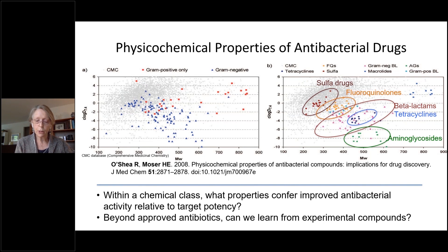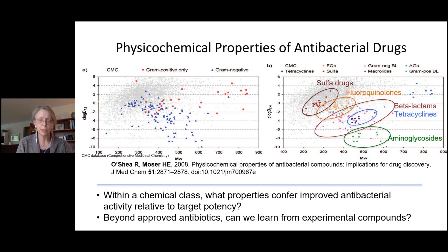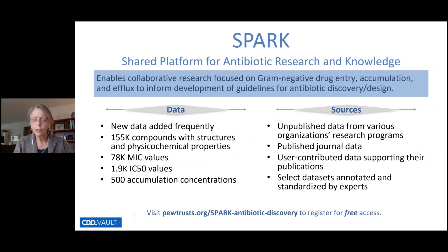All the compounds on this plot are actual drugs, so by definition, they get into bacteria pretty well and inhibit their targets once they get there. What if we had a much larger study set, including experimental compounds? And this brings me to the SPARC database.